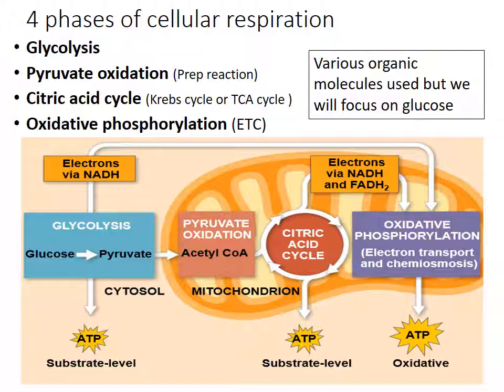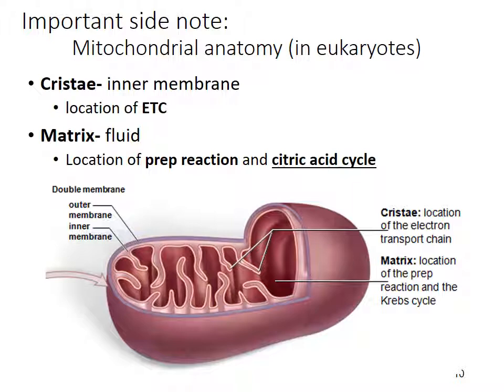The diagram shows all the different reactions, with the mitochondrion — that thing that looks like a jelly bean with tiger stripes. A good review when you finish this chapter is to look at that picture and explain everything going on in it. Since cellular respiration takes place inside the mitochondrion in eukaryotic organisms, we need to know some mitochondria anatomy. The cristae is the inner membrane, very folded up to increase surface area, and it is the location of the electron transport chain. The fluid within the mitochondria is called the matrix, which is the location of pyruvate oxidation (the prep reaction) and the citric acid cycle.